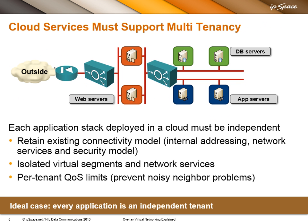On the other hand, what we always ask cloud services to do is support multi-tenancy. We want to deploy numerous application stacks in the same cloud environment, and every application stack must be totally independent. Application developers want to retain their existing connectivity models — they don't want to change addresses, the security model, or the network services they use. Everything should stay unchanged. We just want to move it to the cloud to work faster, cheaper, or be more agile. So we need to provide isolated virtual segments and network services per tenant.